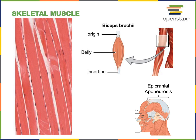A broad tendon is known as an aponeurosis. The epicranial aponeurosis is an example — a broad tendon located on the superior surface of the cranium. It connects to the frontalis muscle found on the anterior of the cranium overlying the frontal bone, as well as the occipitalis muscle located on the posterior of the cranium overlying the occipital bone.